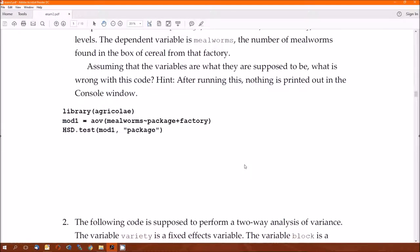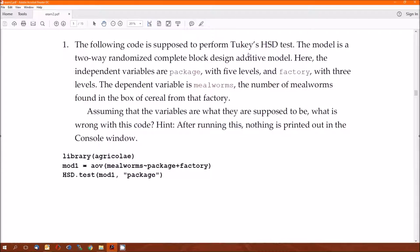The errors. It's supposed to perform Tukey's HSD test. It does look like it performs the HSD test. Note, I had to attach the library agricolae. Two-way randomized complete block design. Additive model. Independent variables are package and factory. Dependent is mealworm. Assuming the variables are what they're supposed to be, what's wrong with this code? Hint: after writing this, nothing is printed out in the console window. It's because in the agricolae package, these multiple testings require to be wrapped in a print statement. It is one of the annoying things about the agricolae package.